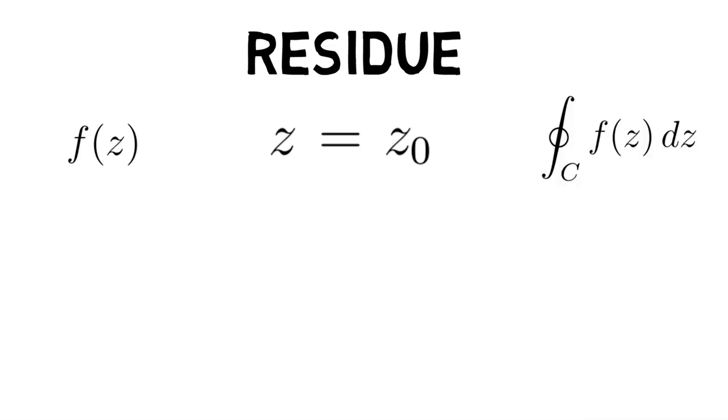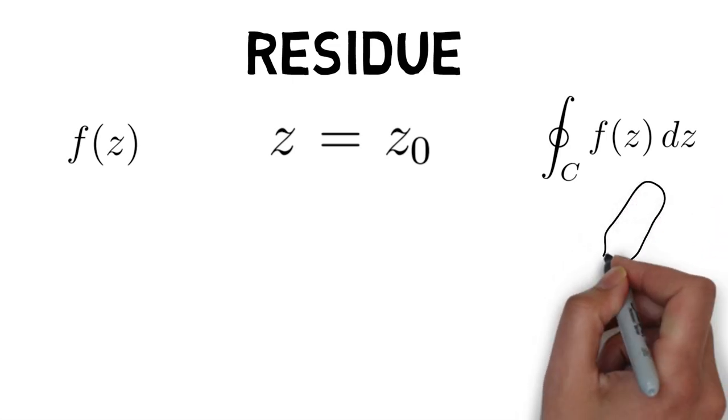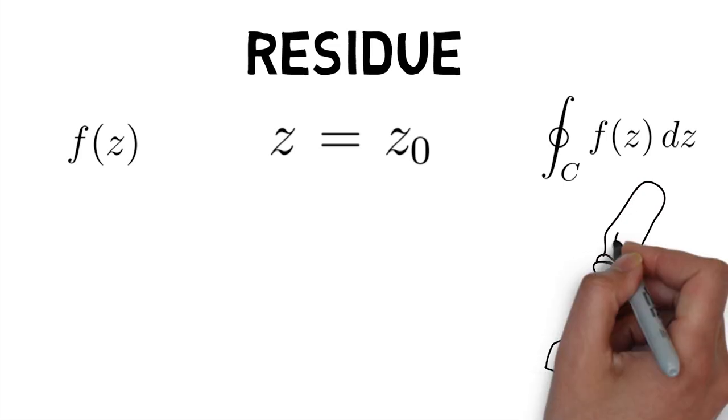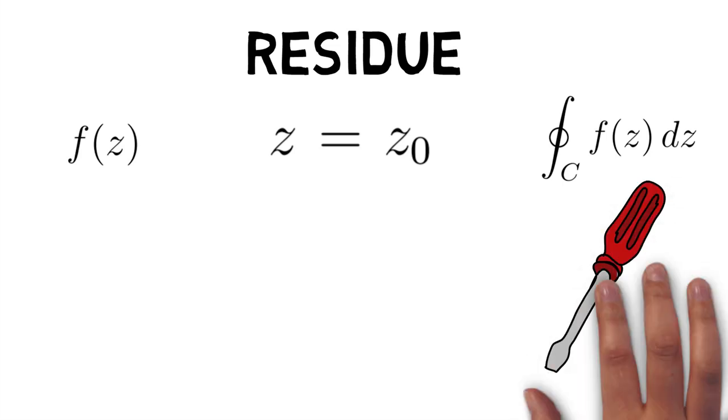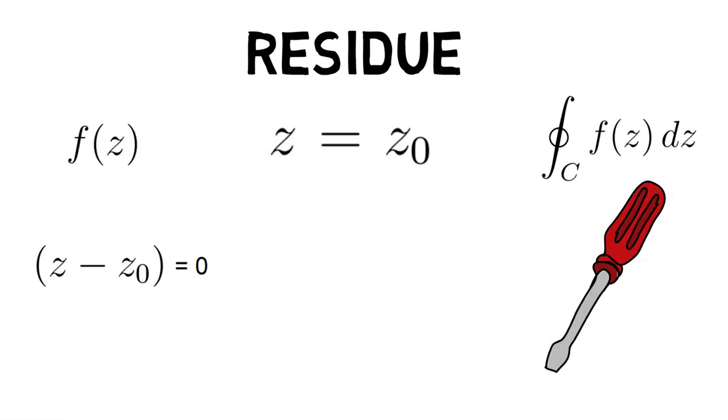To evaluate the closed integral of f around c, we can expand f in a Laurent series in powers of z minus z0. We know that the integral of each of the positive and negative powers of z minus z0 is 0.